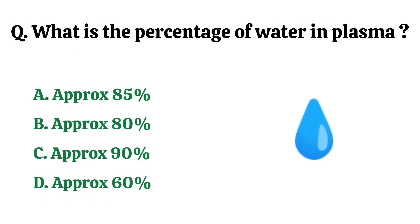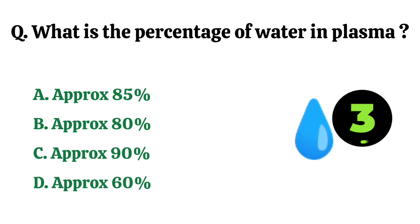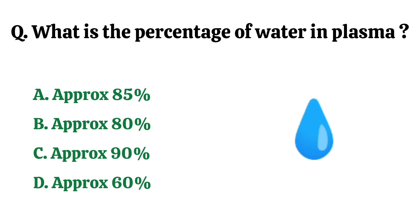What is the percentage of water in plasma? The correct answer is option C. Approximately 90%.